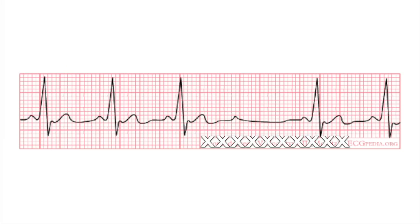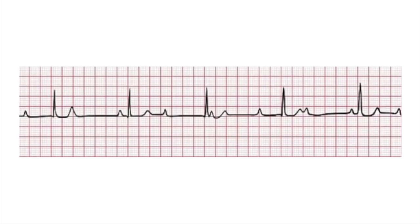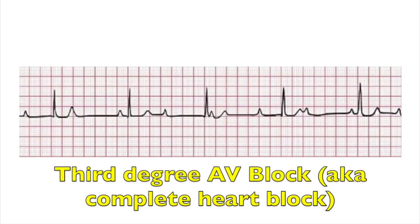This is the second degree Mobitz type 2. You can tell because there's a P to every QRS, but there's no increased lengthening like before, and then all of a sudden there's a drop. The third degree AV block is one where the P's and QRS's are beating completely separate from each other — the atrium is beating on its own and the ventricle is beating on its own with no association between them, so you should have similar intervals between the P's and between the QRS's.